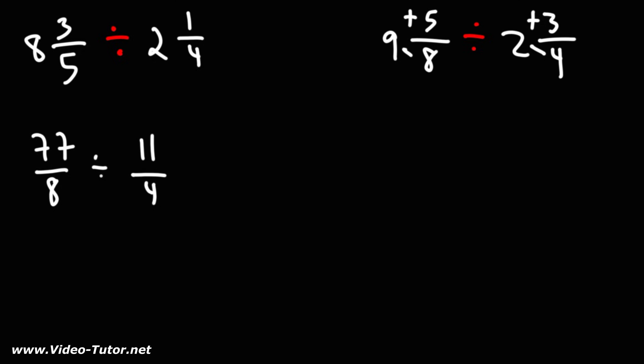So now we're dividing two fractions. To convert this division problem to a multiplication problem, you want to use the expression keep change flip. That is, keep the first fraction the same, change division to multiplication, and then flip the second fraction.